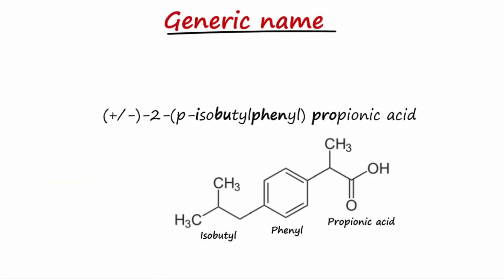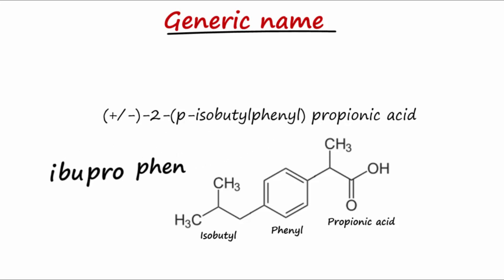Taking parts of the chemical name — the 'i', the 'bu', the 'pro', and the 'phen' — we come up with the shortened generic name: ibuprofen.